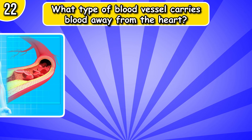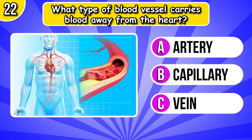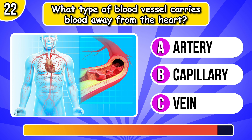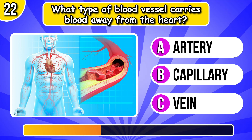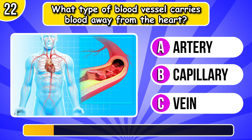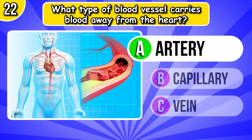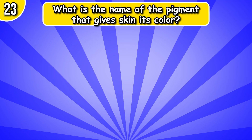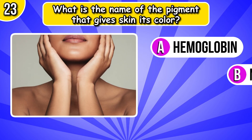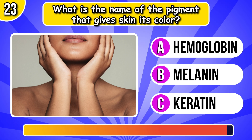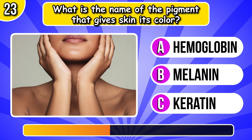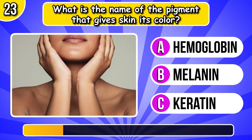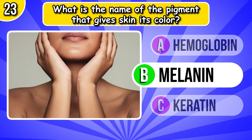What type of blood vessel carries blood away from the heart? It's artery. What is the name of the pigment that gives skin its color? Melanin.